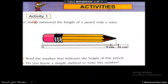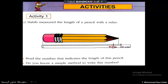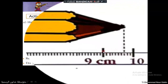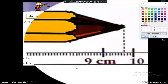Activity 1: Habib measured the length of a pencil using the ruler. Read the number that indicates the length of this pencil. One will say that the length of a pencil is 9 centimeters, or one will say it is 10 centimeters. But if you look at it, the length of a pencil is between 9 and 10 — it is more than 9 and less than 10.